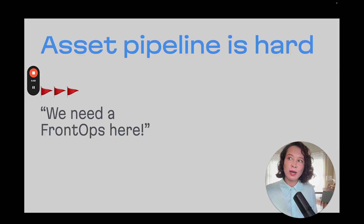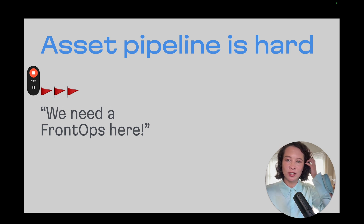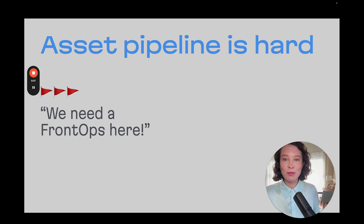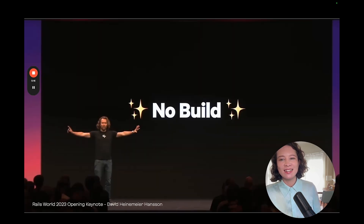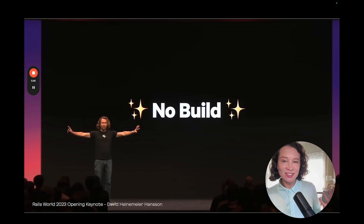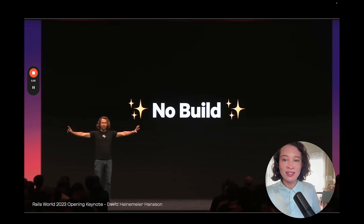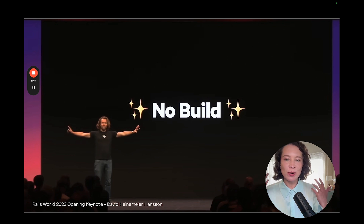The asset pipeline is hard, but it was a red flag for me when inside Martians people would say, 'Hey, we need a front ops engineer here.' A normal Martian front-end engineer is not enough — we need a special person just to fix asset pipeline problems. The author of Rails, David Heinemeier Hansson, agrees so much that last year he announced NoBuild as the new mainstream for new versions of Rails. NoBuild is faster than any build tool, but it's a great illustration of how fed up people are with build tool and asset pipeline problems.